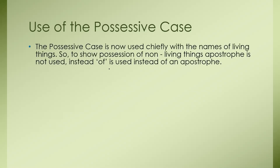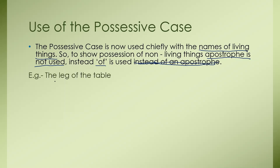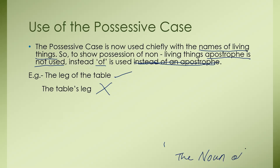Use of the Possessive Case. The possessive case is not used chiefly with the names of non-living things. So, to show possession of non-living things, the apostrophe is not used. Instead, 'of' is used. Example: 'the leg of the table', not 'the table's leg'. Many times we also face the question of why we cannot use an apostrophe S with non-living things. The reason behind this is the Noun of Noun Rule, which I will explain later in this video.